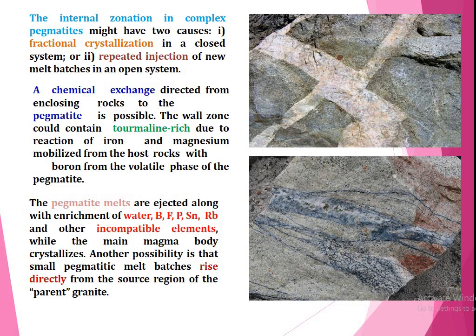The internal zonation in complex pegmatites might have two causes: first, fractional crystallization in a closed system, and second, repeated injection of new melt batches in an open system. The chemical exchange directed from the enclosing rocks into the pegmatite is possible. The wall zone could contain tourmalinites due to reaction of iron and magnesium mobilized from the host rock with boron from the volatile phase of the pegmatite.